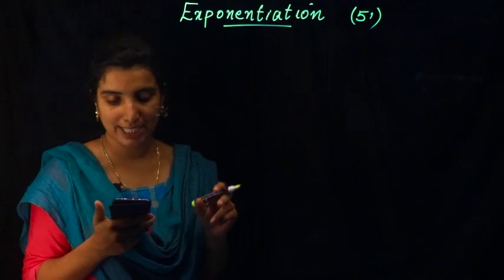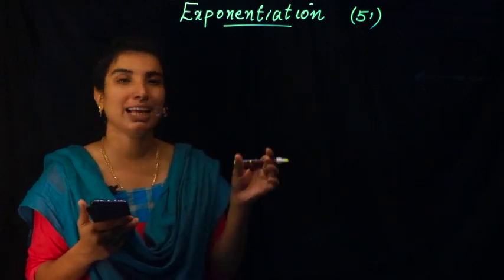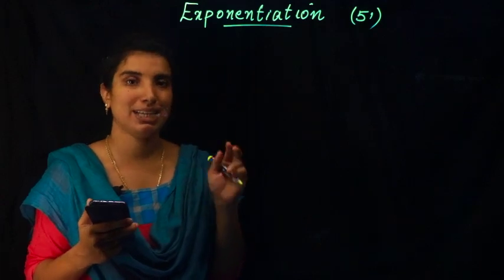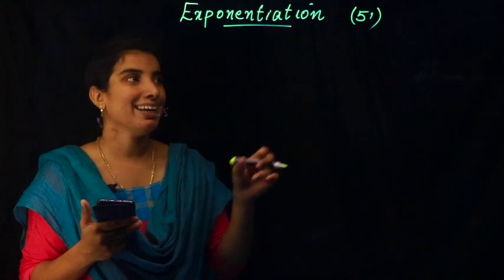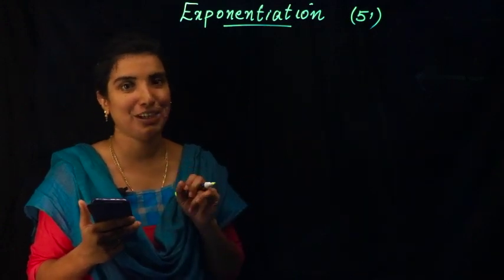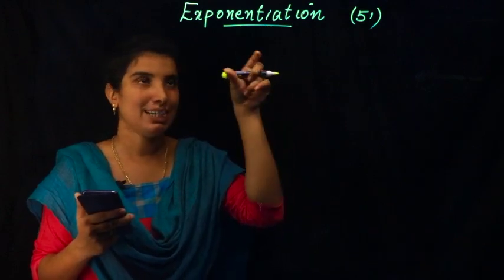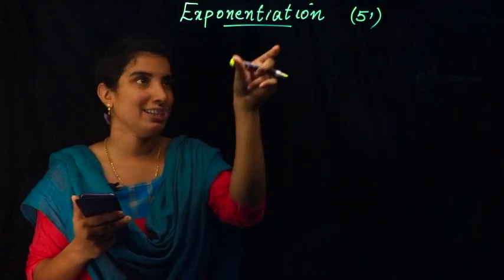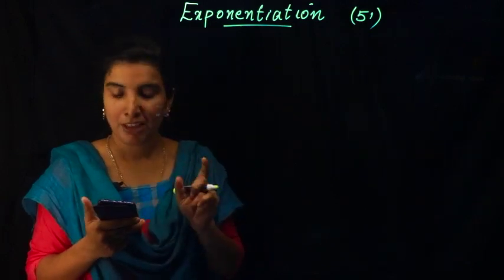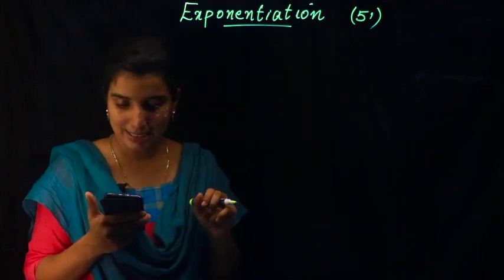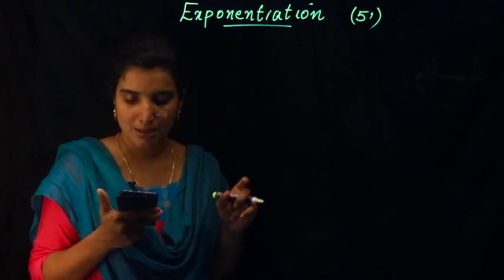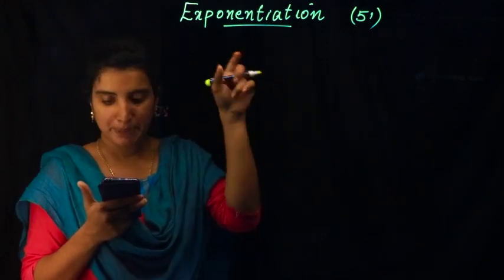We usually do the four operations of addition, subtraction, multiplication, and division. Just as multiplication by natural numbers is repeated addition, exponentiation is repeated multiplication. So, multiplication by natural numbers is repeated addition, and repeated multiplication is exponentiation.